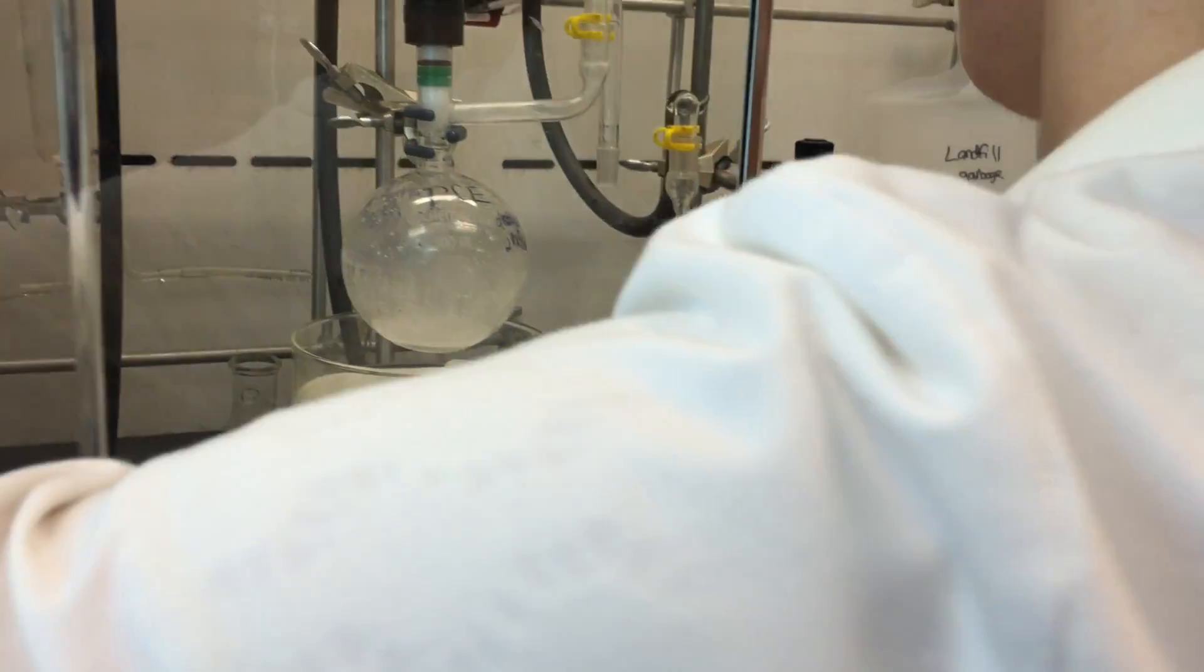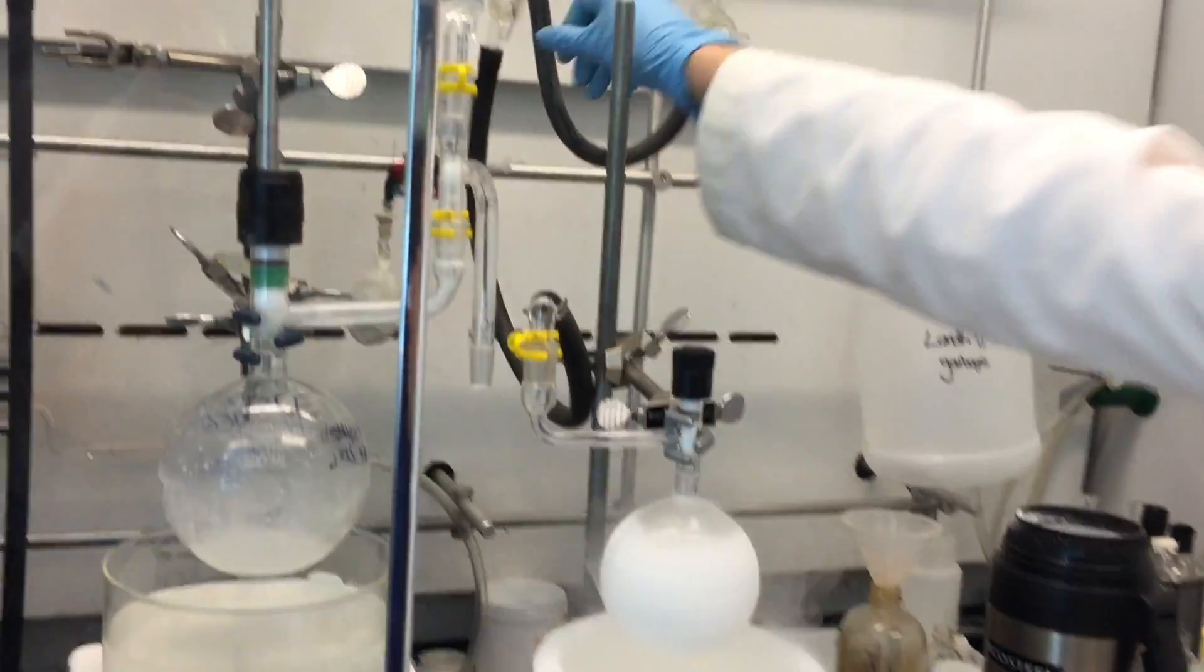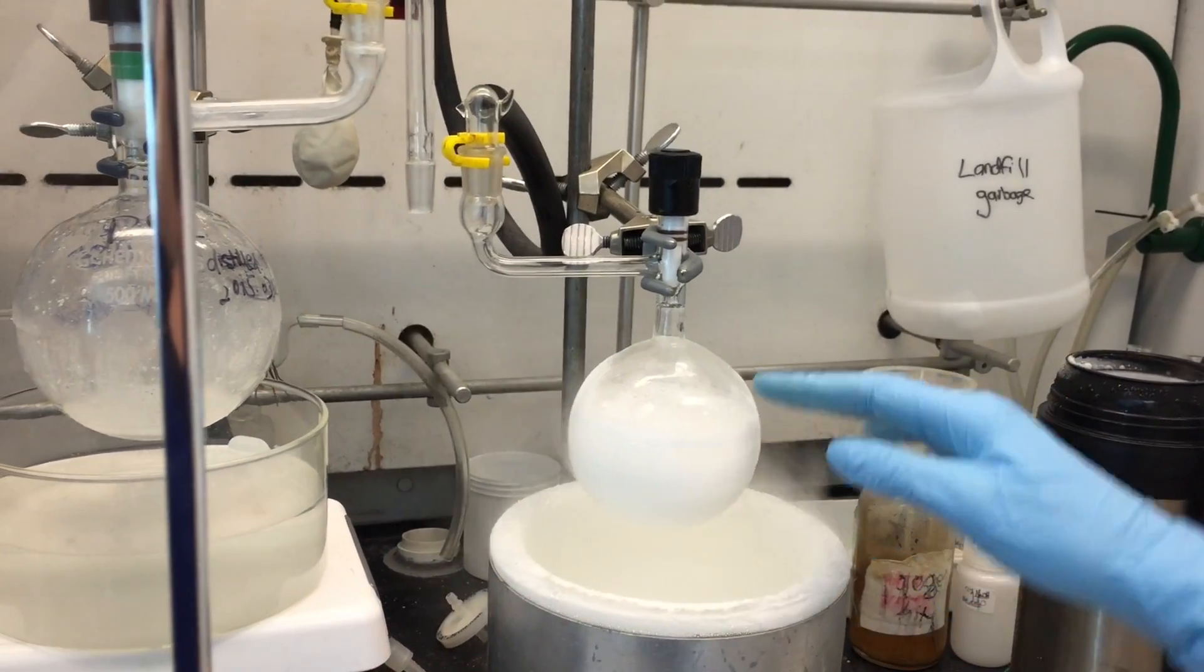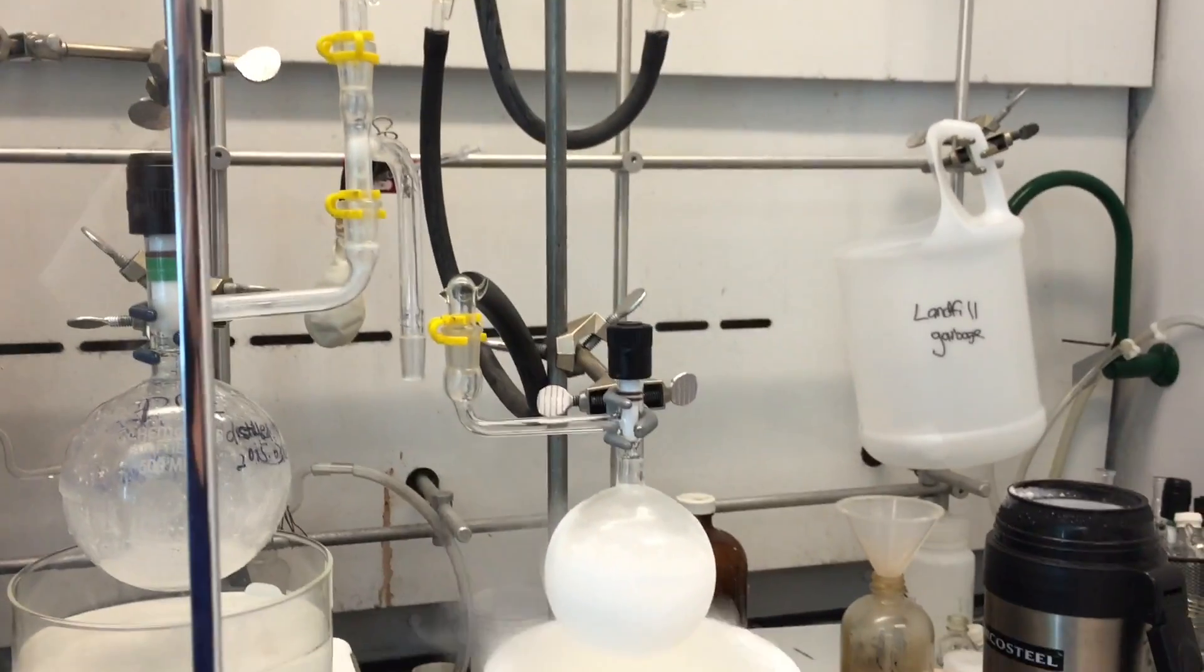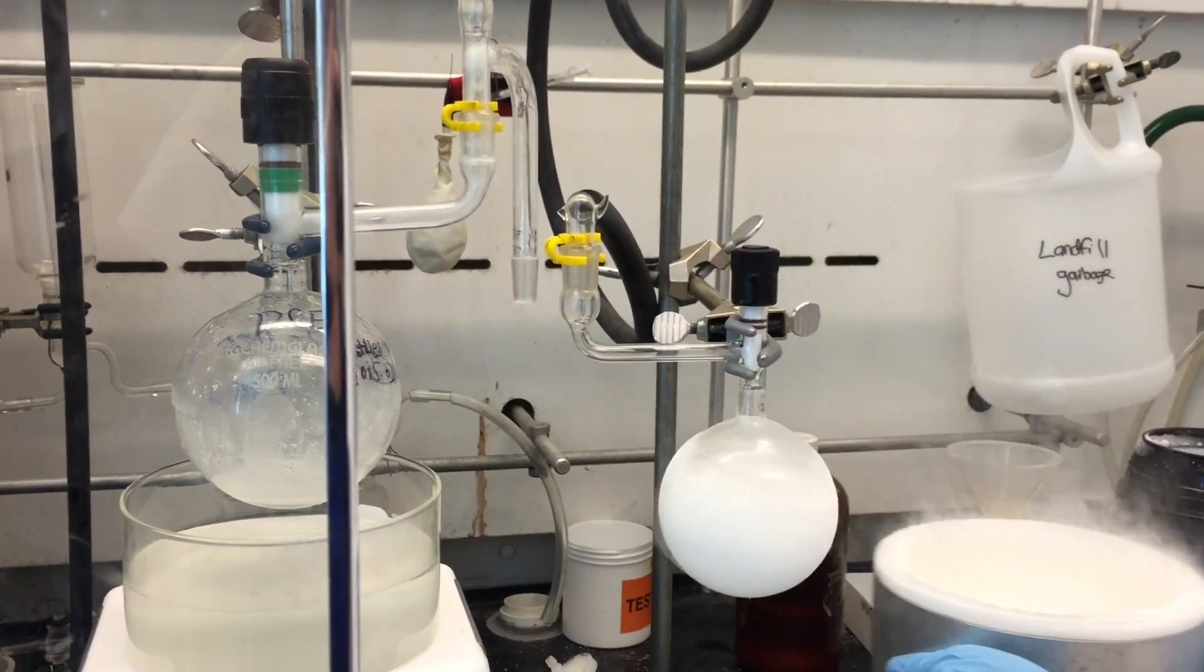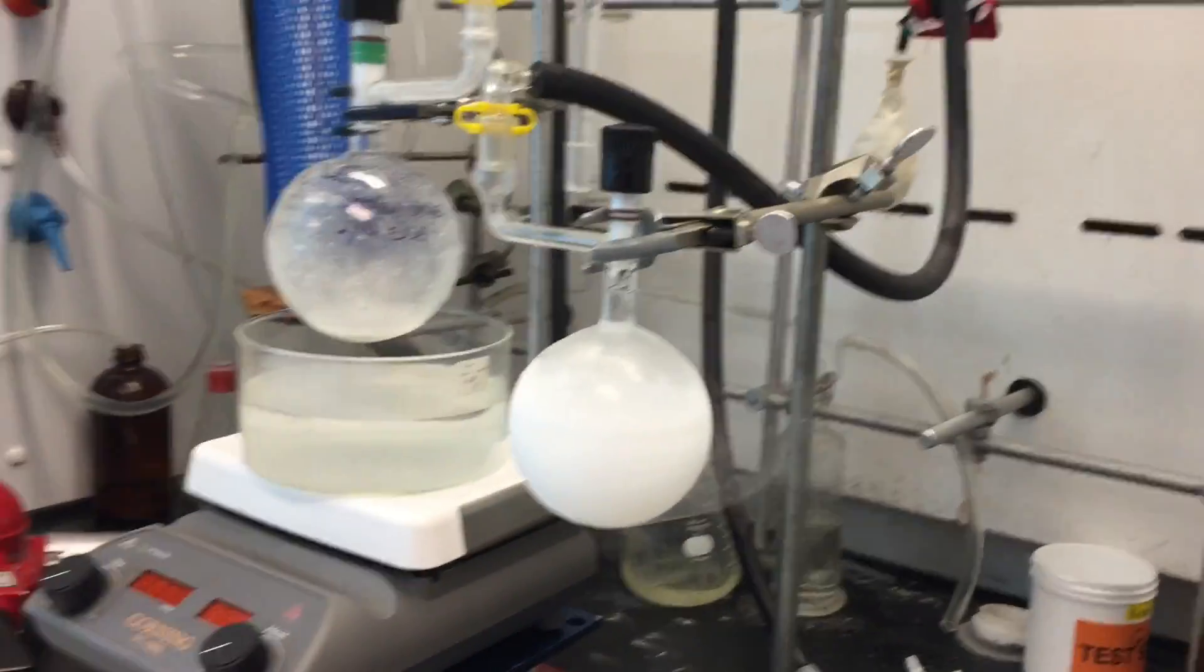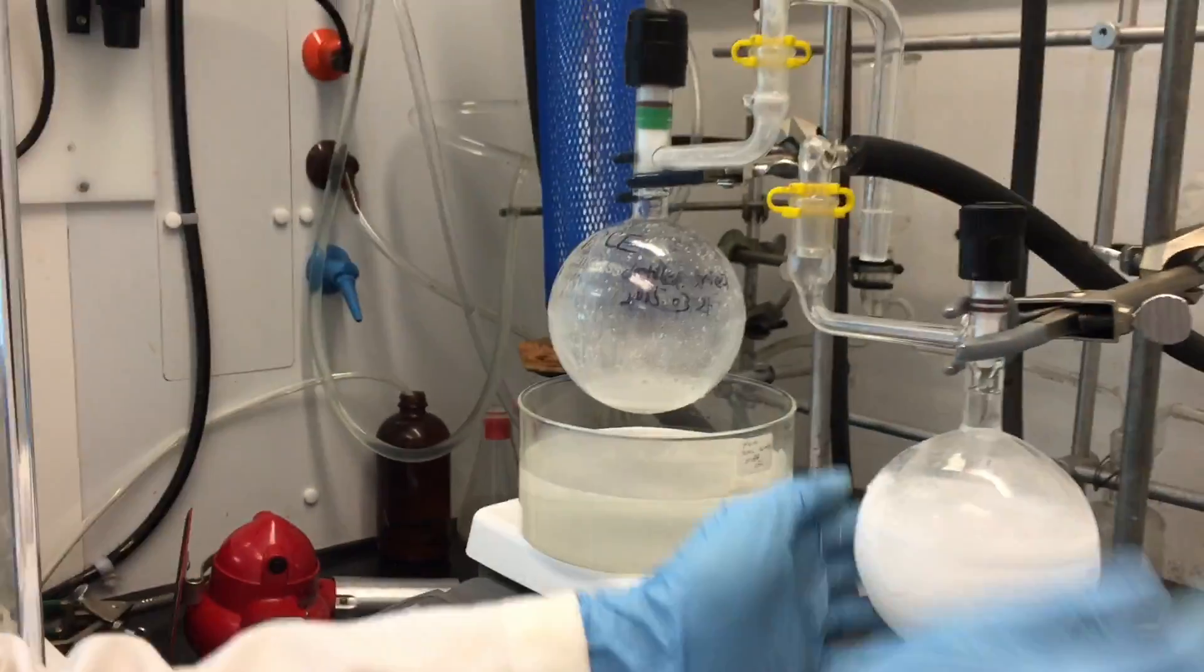So this is open to the nitrogen and as the nitrogen in here is going to heat up and expand, all excess pressure can just exit through the Schlenk line. But in order to let this warm up, we want this flask to warm up nice and evenly so it doesn't crack.